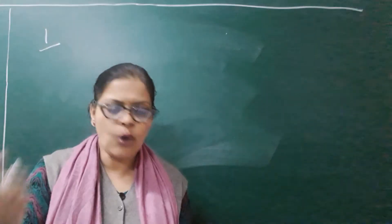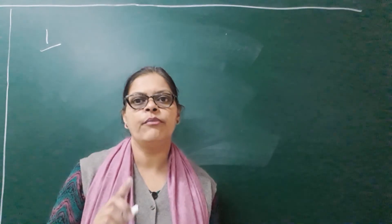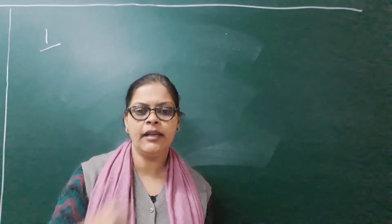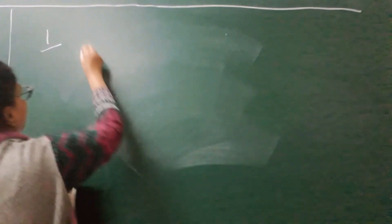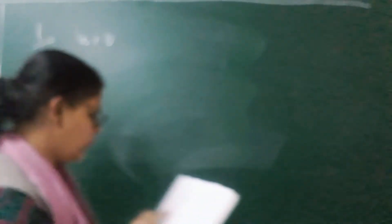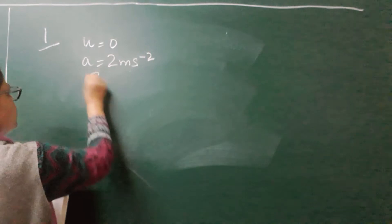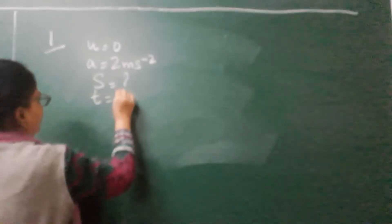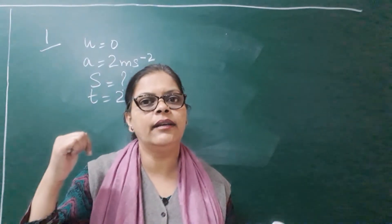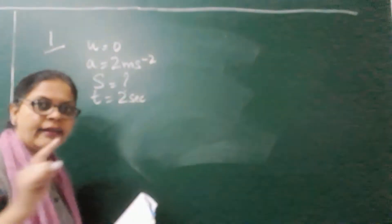I want you to pay attention and solve with me. A body starts from rest. Whenever it is mentioned that a body starts from rest, it means its initial velocity U is 0. It covers a uniform acceleration of 2 meters per second square. Find the distance covered when the time given is 2 seconds. While reading the numerical problem, you have to keep on writing the data. This is known as the data and carries marks.